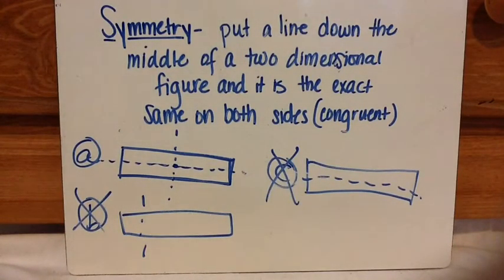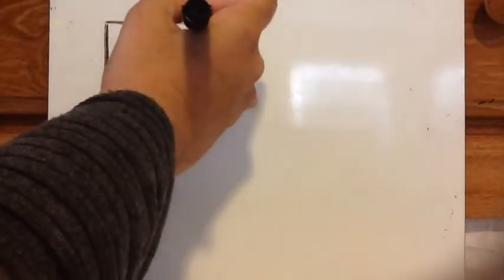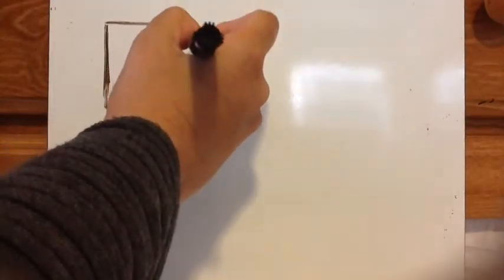So now I'm going to show you using patty paper, a marker, and a marker board different lines of symmetry. Let's look at this object. This is a four-sided object. It's a quadrilateral. It's a square. It can be considered a rhombus. It can be considered a parallelogram.